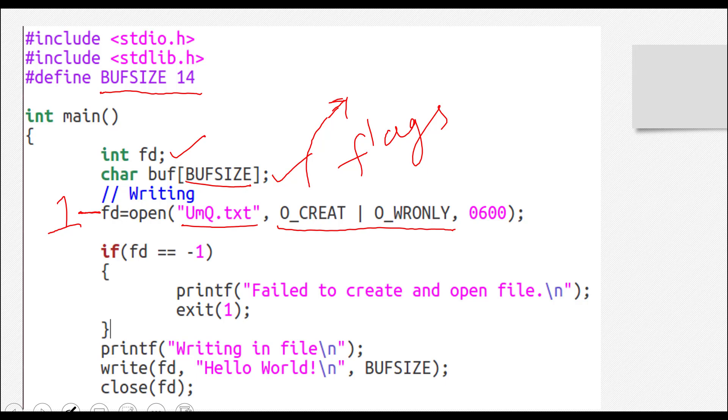So we are just telling the kernel if this file, unq.txt, is not existing already in this particular folder, create it for us. And if it exists, then just use the old one. This pipe operator is just concatenating two flags together.